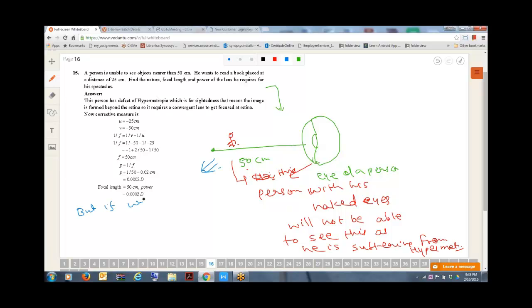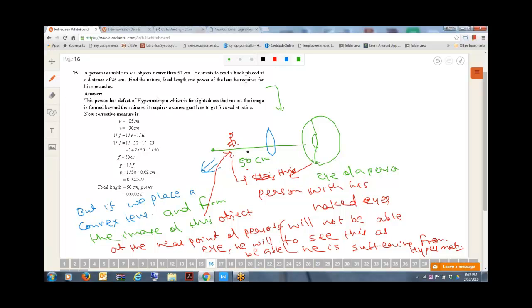But if we place a convex lens over here, and form the image of this object, a person with a defective eye will be able to see it.